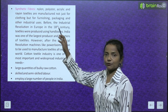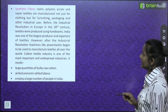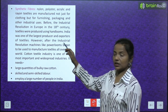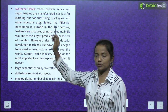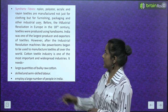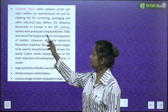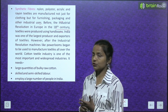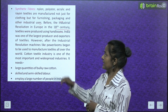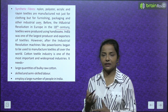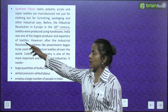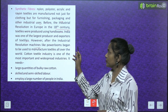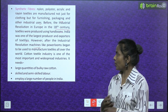The third type is synthetic fibres — nylon, polyester, acrylic and rayon. Textiles are manufactured not just for clothing, but for furnishing, packaging and other industrial uses. Before the industrial revolution in Europe in the 18th century, textiles were produced using handlooms. India was one of the largest producers and exporters of textiles. However, after the industrial revolution, machines like power looms began to be used to manufacture textiles all over the world.